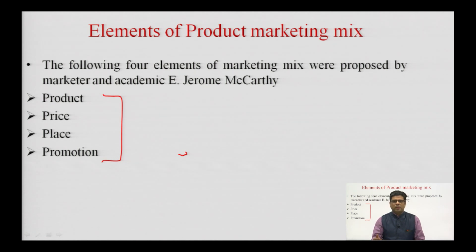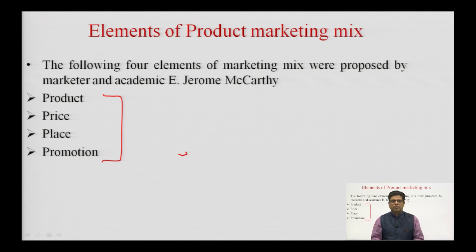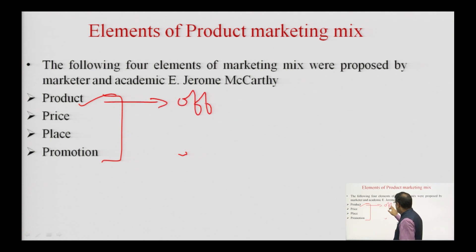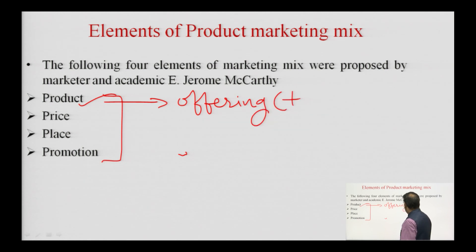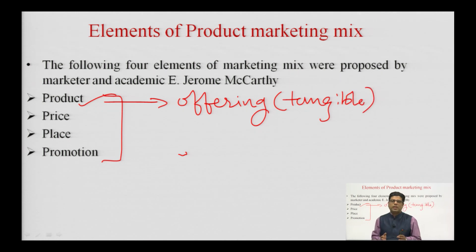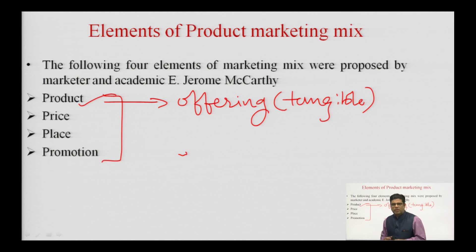A product is manufactured at one location while it is consumed at some other location. For example, a pen is manufactured in a factory located outside the city while it is consumed at home. In case of such a tangible product, the first element of marketing mix is product itself — the offering being given to the consumer. When I go and purchase a pen, a chair, a laptop, or a mobile phone, I am basically buying a tangible product.